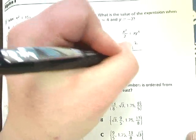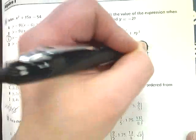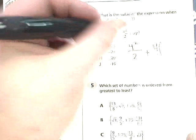x is 4, so I do 4 squared over 2 plus x, which is 4, times y to the third power.